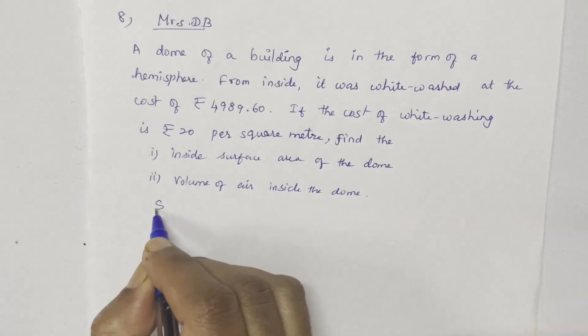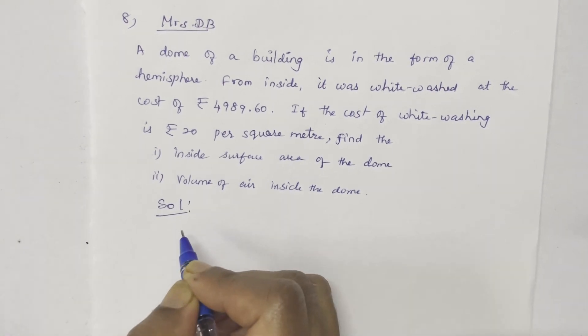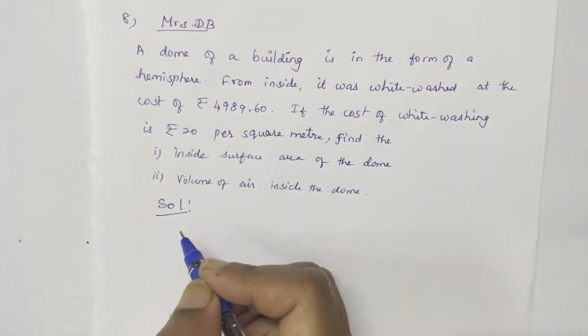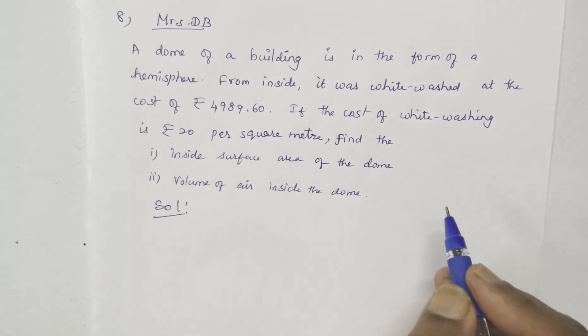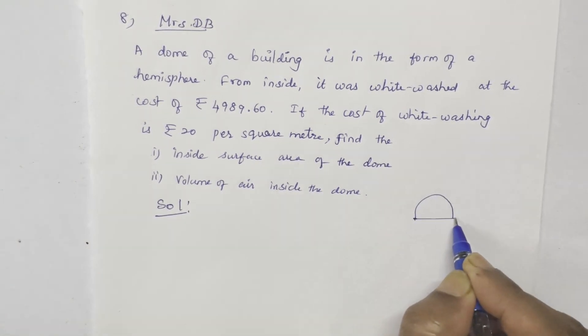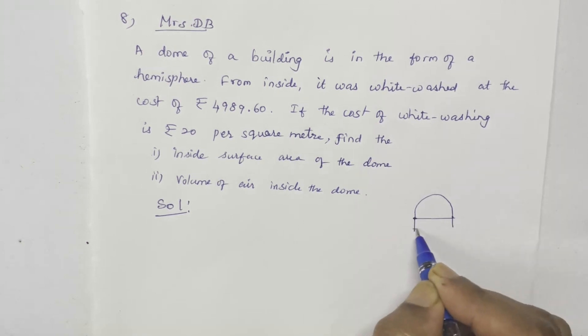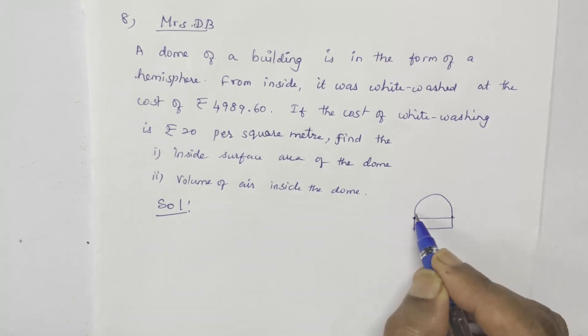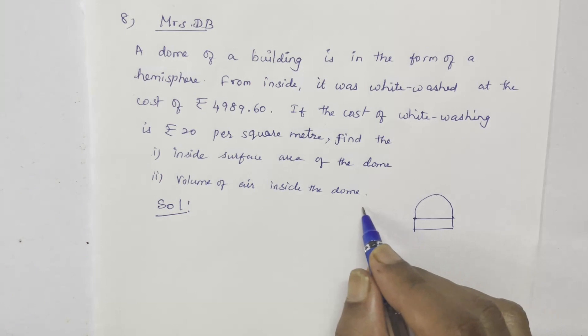A dome of a building is in the form of a hemisphere. From inside, it was whitewashed at a cost of rupees 4989.60. If the cost of whitewashing is rupees 20 per square meter, find the inside surface area of the dome and the volume of air inside the dome.